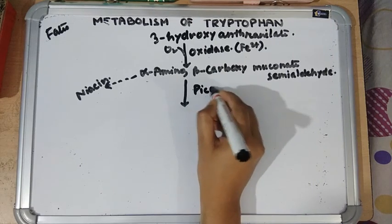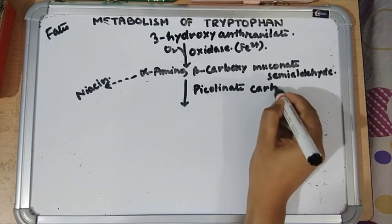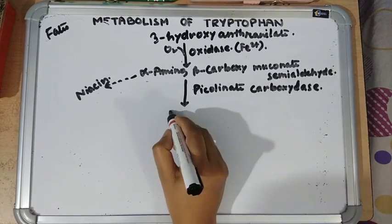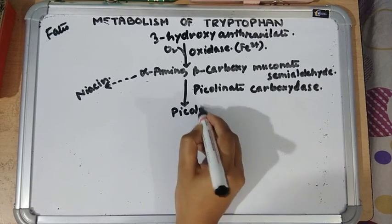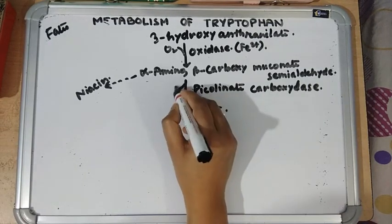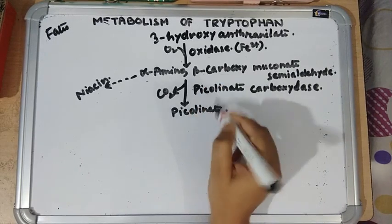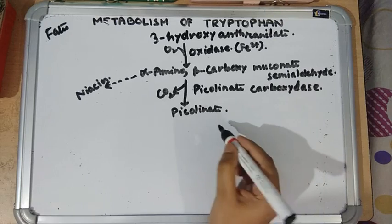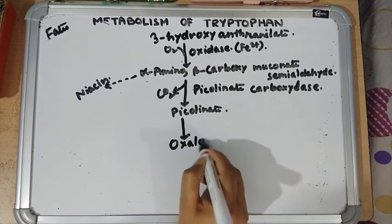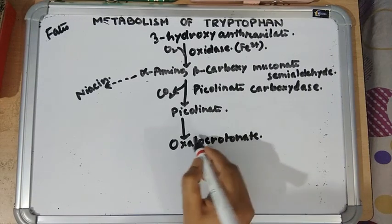The intermediate is acted upon by the enzyme picolinate carboxylase to form picolinate, or in the other direction alpha-amino-muconate-semialdehyde. This picolinate is converted into oxaloprotenate by the enzyme aldehyde dehydrogenase.